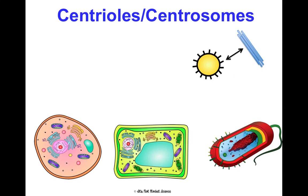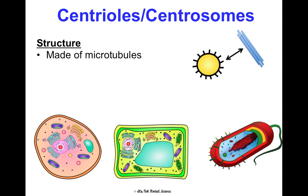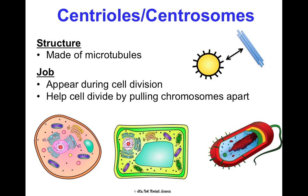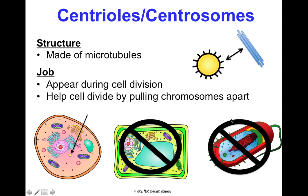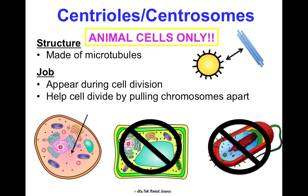Centrioles or centrosomes — you may see these words used interchangeably in different sources. They're made of microtubules, and their job is to show up during cell division and help the cell divide by pulling chromosomes apart. We'll talk about them more in Concept 3. They're found in animal cells only — not in plant cells or prokaryotic cells.